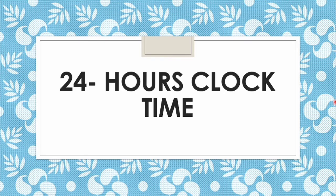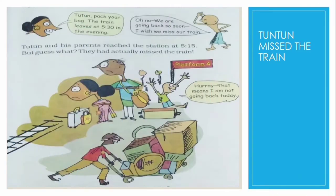Tuntun missed the train. Tuntun's school had closed for the summer holidays. He went to his grandma's place. He met a lot of his cousins there. He was enjoying himself and didn't want to go back home.